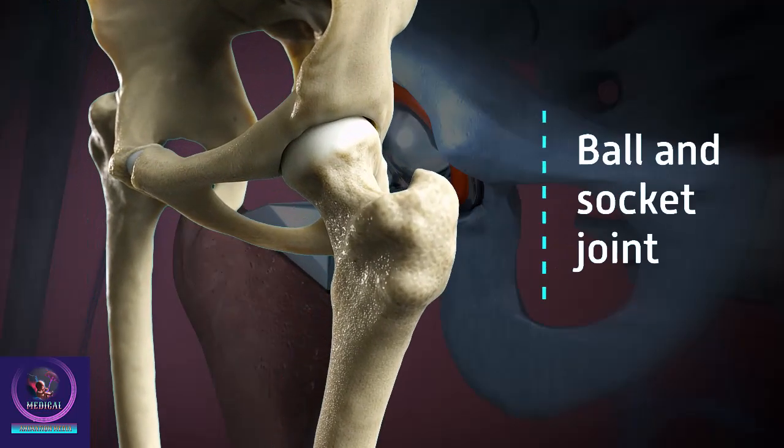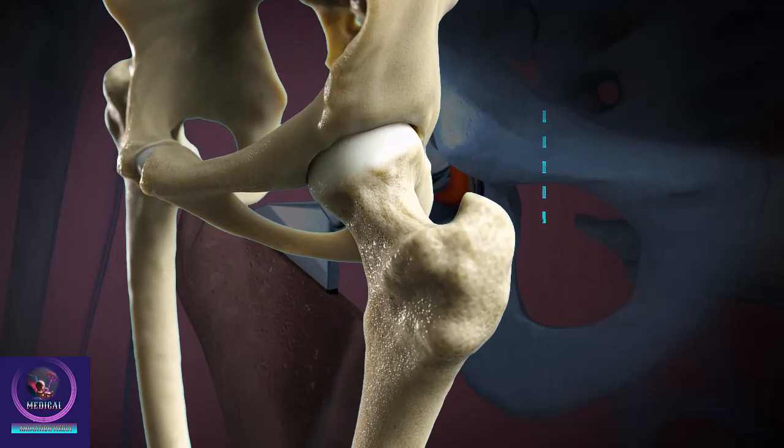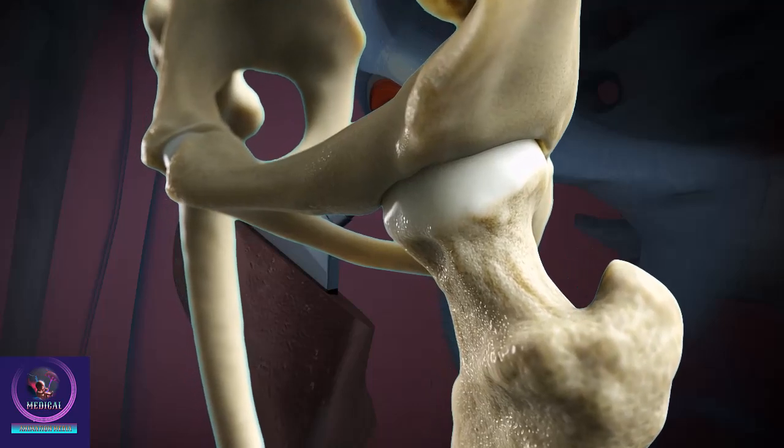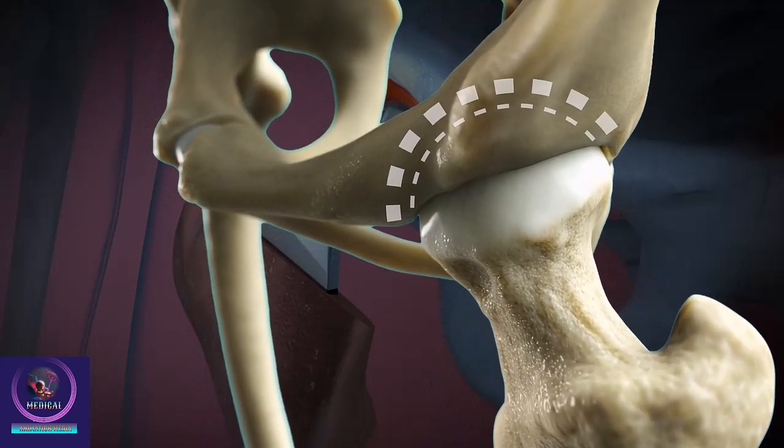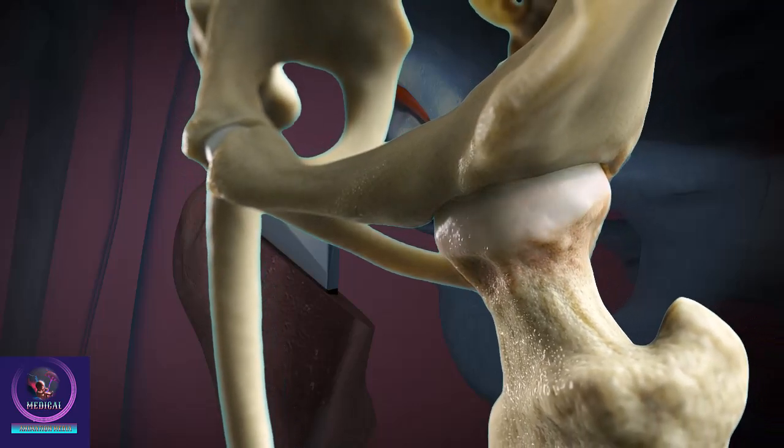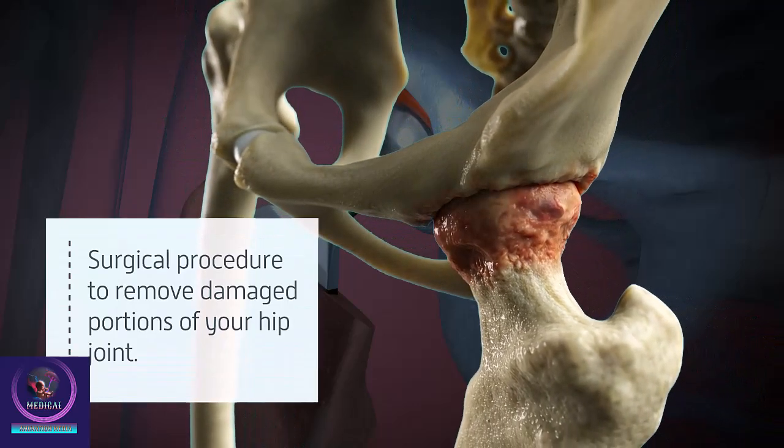The hip is a ball and socket joint. The socket is part of your pelvis or hip bone. The ball is located at the top of your femur or thigh bone. Both are covered with a layer of smooth cartilage that cushions and protects your bones when you move.